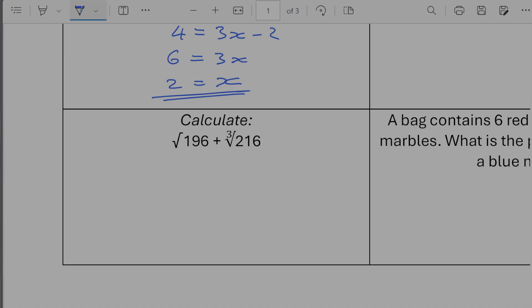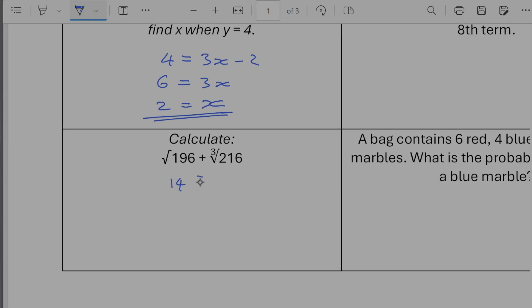Calculate the square root of 196 plus the cube root of 216. So the square root of 196 is 14. And then the cube root of 216 is 6. So 14 plus 6 is going to give us 20.